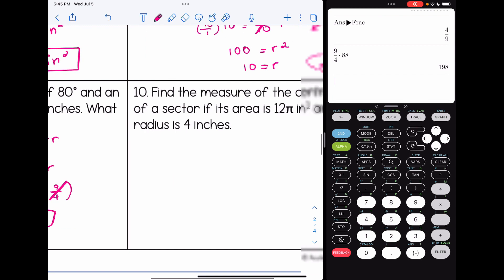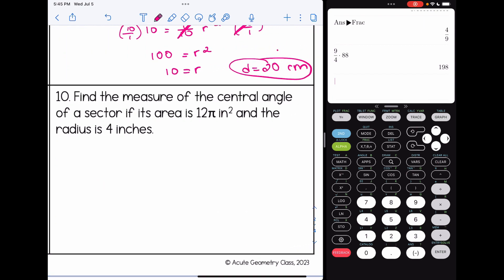All right, last problem here, find the measure of the central angle of a sector if its area is 12π inches squared, and the radius is 4 inches. So we're going to reverse things here. And now we're going to find the central angle. So the area of the sector is equal central angle over 360 pi r squared. Let's fill in what we know. So 12π equals, I'm just going to put x for our central angle since we don't know what that is, pi, and the radius is 4.